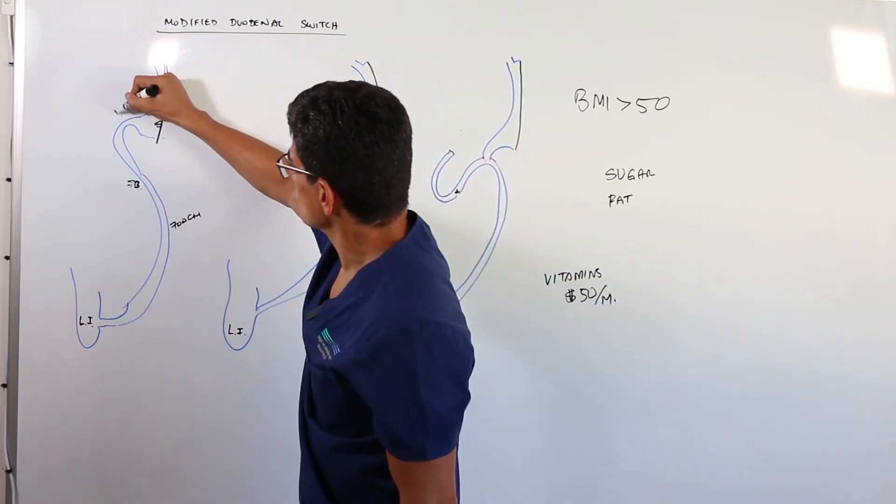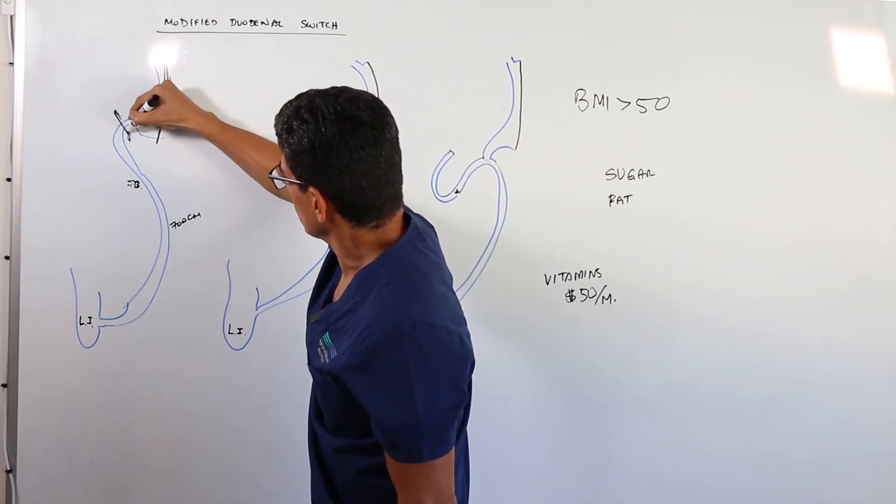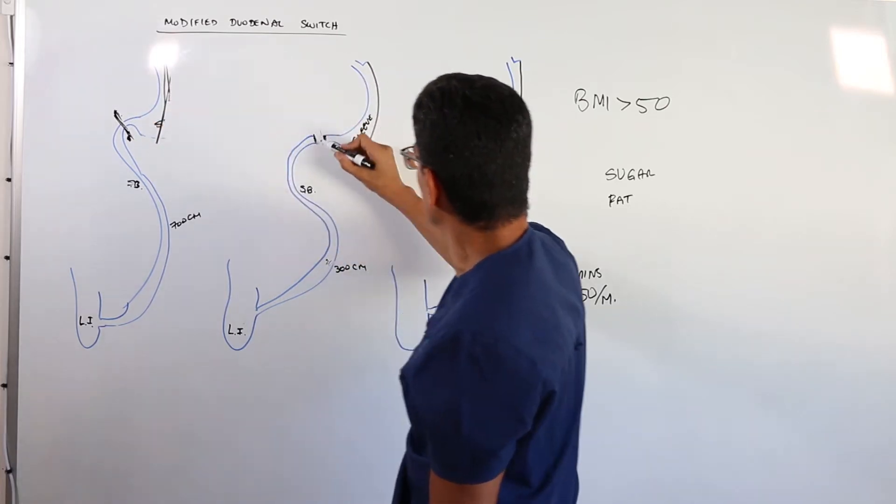The next step is to make a cut here, right here. Right at the beginning of the intestine, I'm going to cut it. I'm going to separate it.